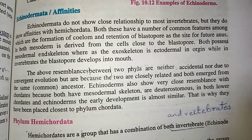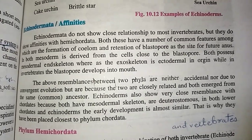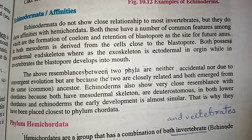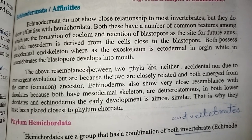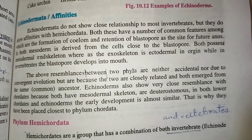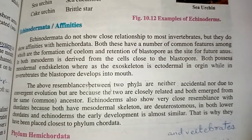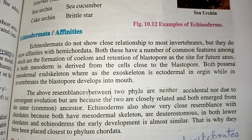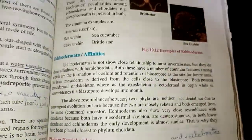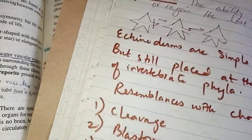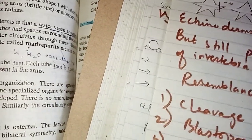The resemblances between echinoderms, hemichordates, and chordates are neither accidental nor due to convergent evolution. Convergent evolution means structures differ but functions are the same. Rather, these resemblances exist because the two groups are closely related and both emerged from the same common ancestor — their phyletic lineage is common. Echinoderms also show very close resemblance with chordates because both have mesodermal skeleton and both are deuterostomes. In both low chordates and echinoderms, early development is almost similar, and that is why echinoderms have been placed closest to the phylum Chordata.